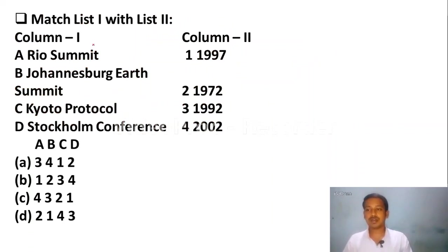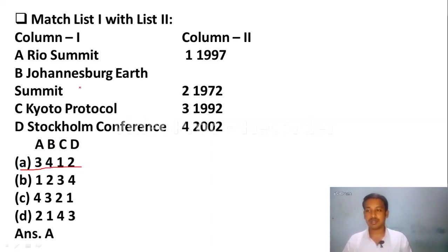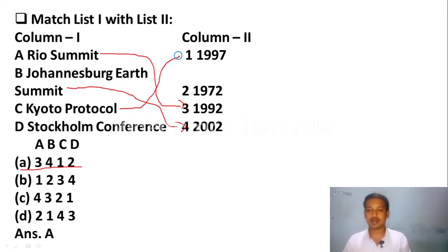Match Column 1 with Column 2: Rio Summit, Johannesburg Earth Summit, Kyoto Protocol, Stockholm Conference — matched with years 1997, 1972, 1992, 2002. The correct answer is Option A: Rio Summit — 1992, Johannesburg Earth Summit — 2002, Kyoto Protocol — 1997, Stockholm Conference — 1972. Please remember the years and summits — a question will come from here.